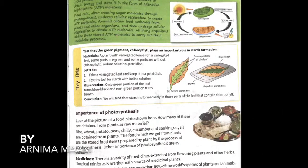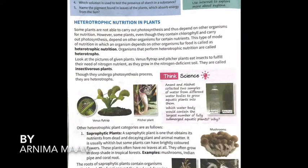Yesterday we covered the importance of photosynthesis. Today we start with heterotrophic nutrition in plants. Autotrophic means those organisms that prepare their own food — they are called autotrophs. Heterotrophic means those animals or organisms that depend on other plants and animals for food — they are known as heterotrophs.